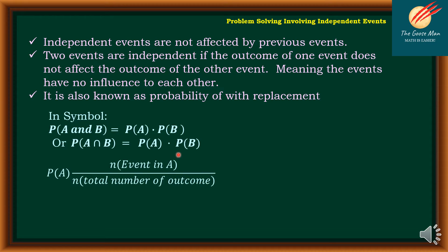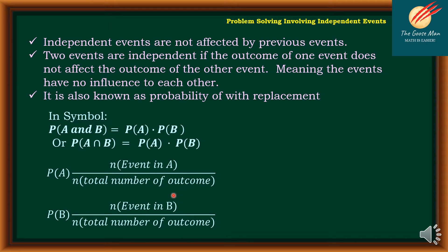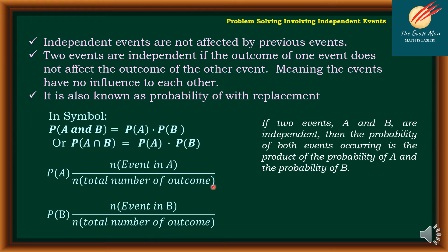Take note that the probability of A is equal to the number of events in A divided by the total number of outcomes. The probability of B is the number of events in B divided by the total number of outcomes. So if two events A and B are independent, then the probability of both events occurring is the product of their corresponding probabilities P(A) and P(B).